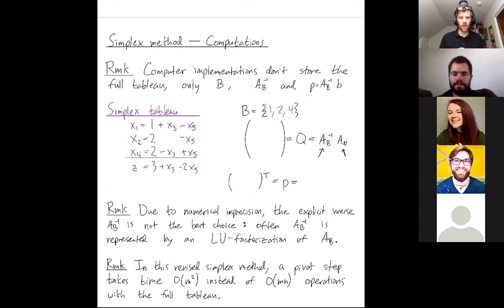So a couple comments on this. Q here is the coefficients of this matrix. So on this example, Q is 1, 1, negative 1, 0, negative 1, negative 1, 1. The formula for Q in general is just this product AB inverse times AN, as we saw last time.